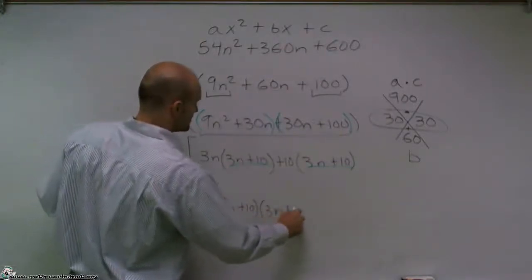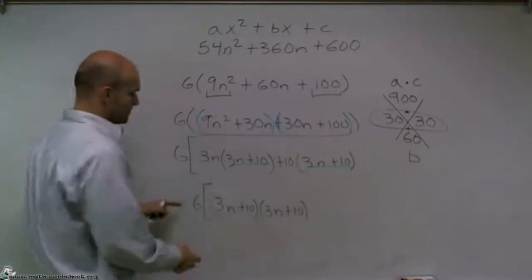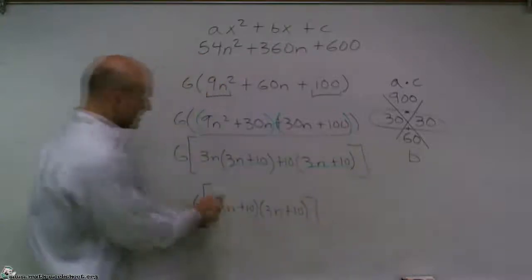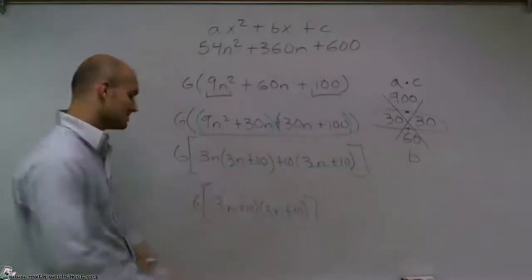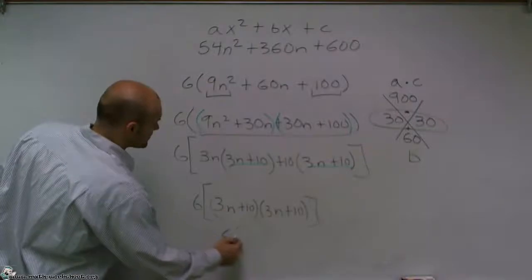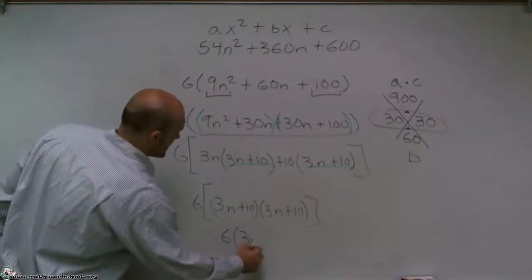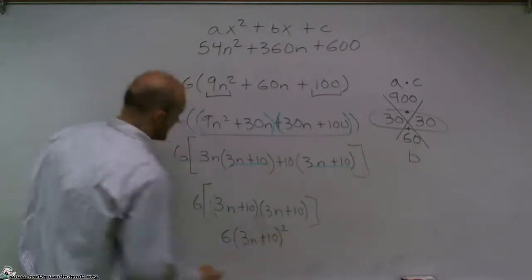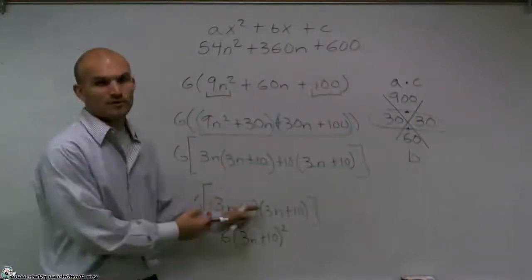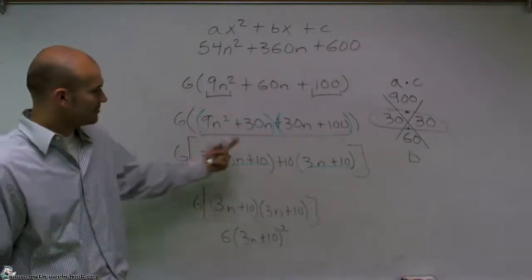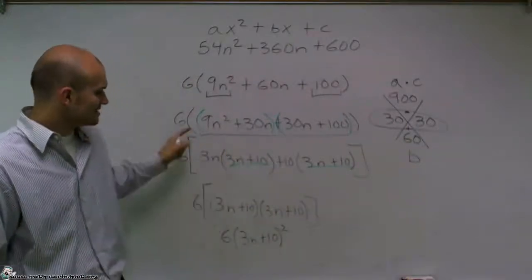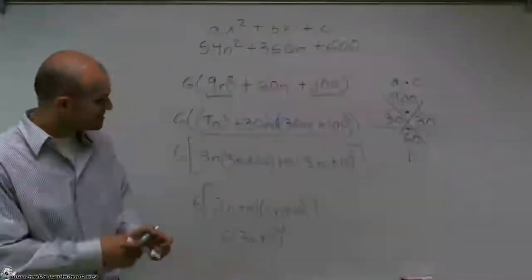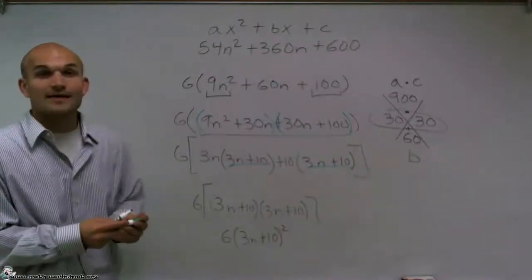Well, 3n plus 10 times 3n plus 10 is 3n plus 10 squared. And again, I've just used the brackets just so I wouldn't get you guys too confused by leaving it there. But I factor out my 6, and I just want to use brackets so you guys weren't seeing so many parentheses. But your final answer would be 6 times 3n plus 10 squared. And that's it.